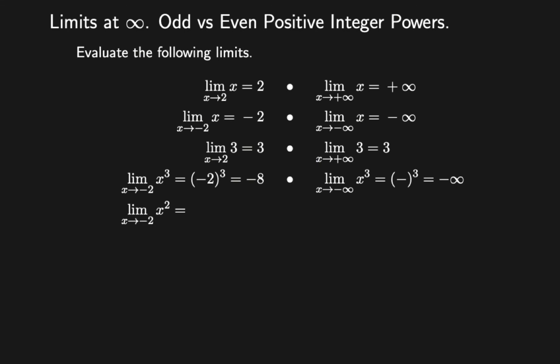Find the limit of x squared as x approaches minus 2. Now, you have an even positive integer power, which is 2. If you substitute minus 2, a negative number, you will get a positive number: 4.